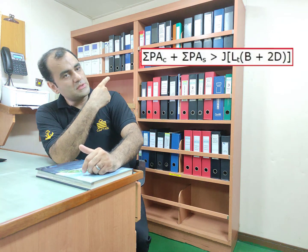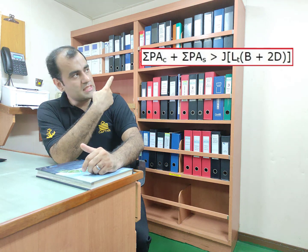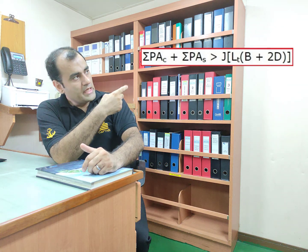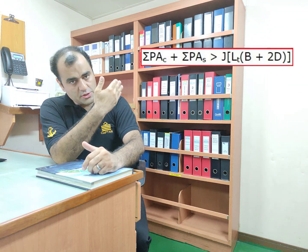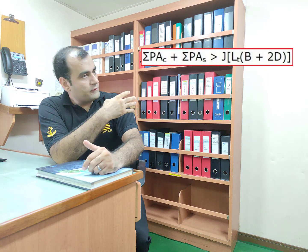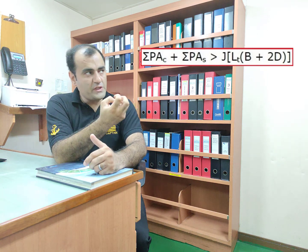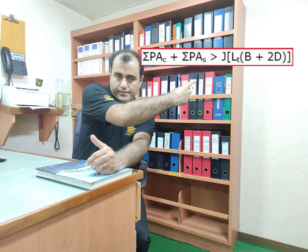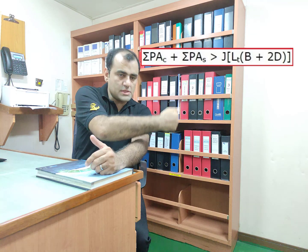In the last part of Regulation 18 there is another requirement about the dimensions of the ballast tanks. As shown in the formula here, the dimensions — length, breadth, and height — of the ballast tanks shall fulfill this requirement and these parameters.